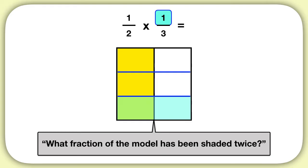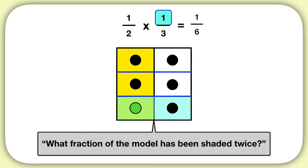We can see that just this one piece has been shaded twice, and it's out of a total of six. So as a fraction, one-sixth of the model has been shaded twice. One-half times one-third equals one-sixth.